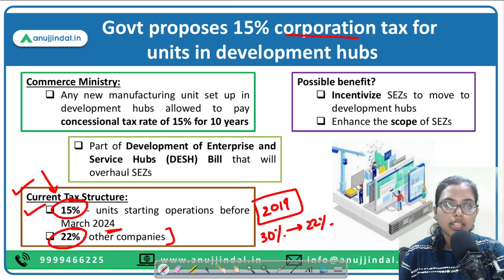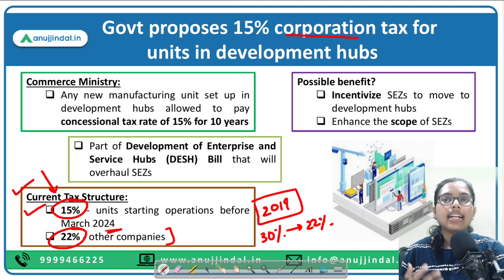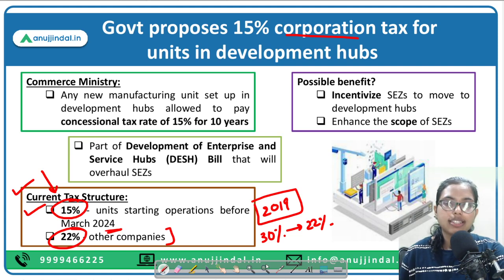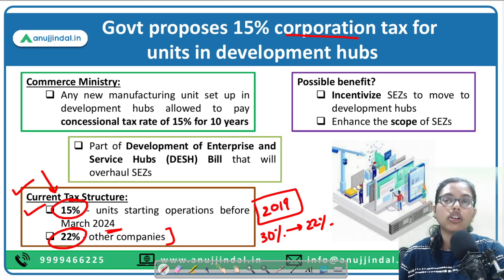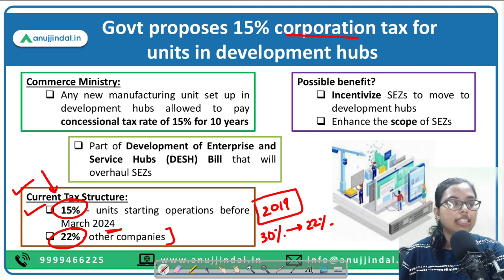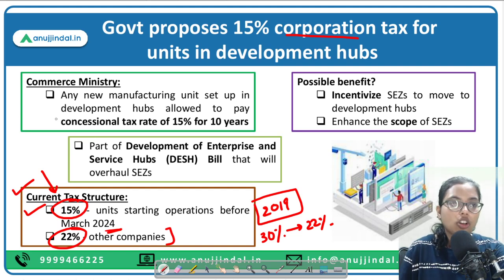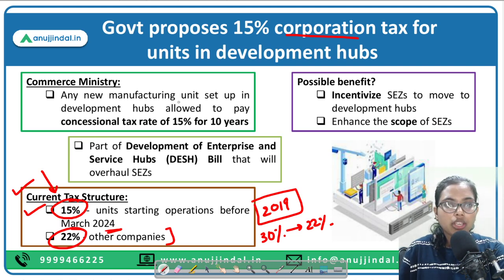The reduction from 30 percent to 22 percent was done to incentivize corporates to pay taxes on time, make more investments, create employment opportunities, and increase economic activity, which is good for the economy. More economic activity means job creation, and job creation leads to GDP growth. So that is the current corporation tax structure.